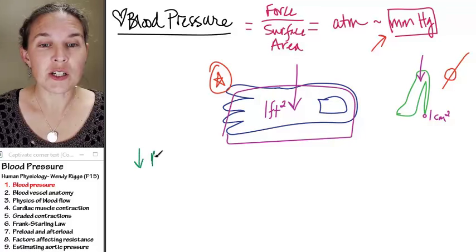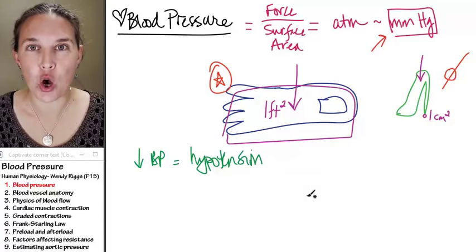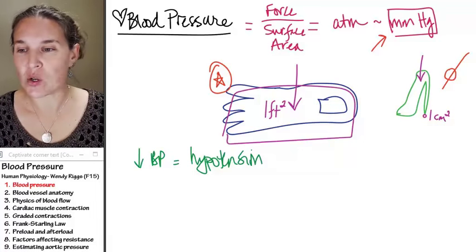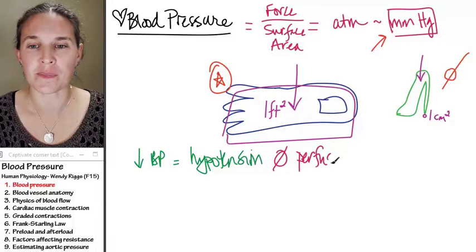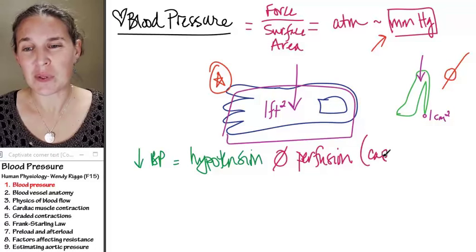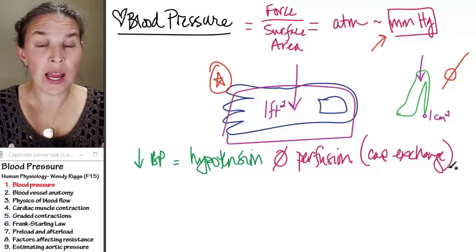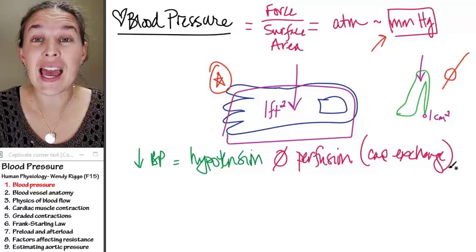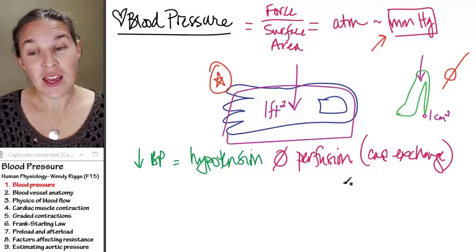Hypotension basically results in low perfusion. What is perfusion? Basically, capillary exchange. If you have low perfusion, you don't have enough pressure to drive your blood through the blood vessels, through the capillaries, where gas exchange and nutrient exchange take place.